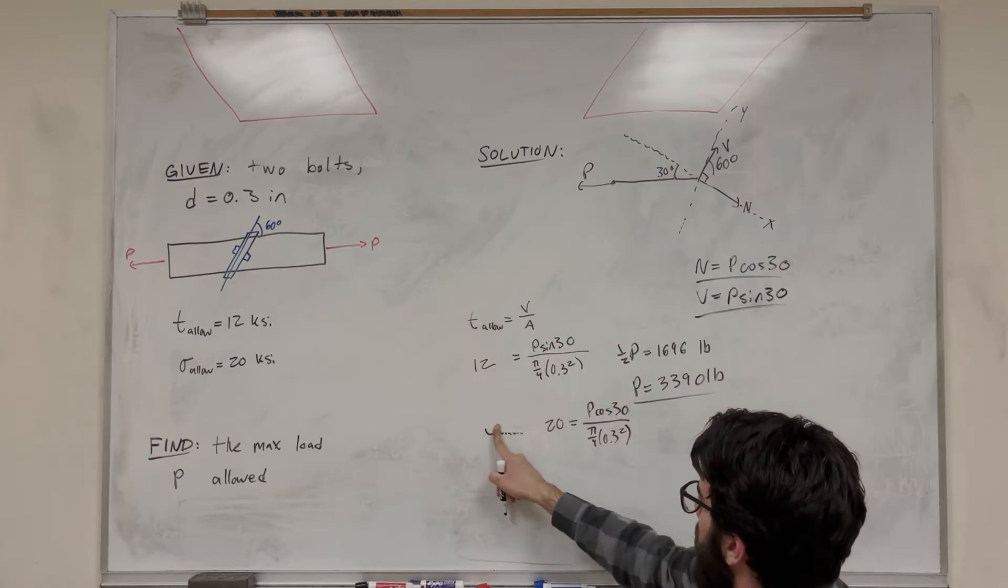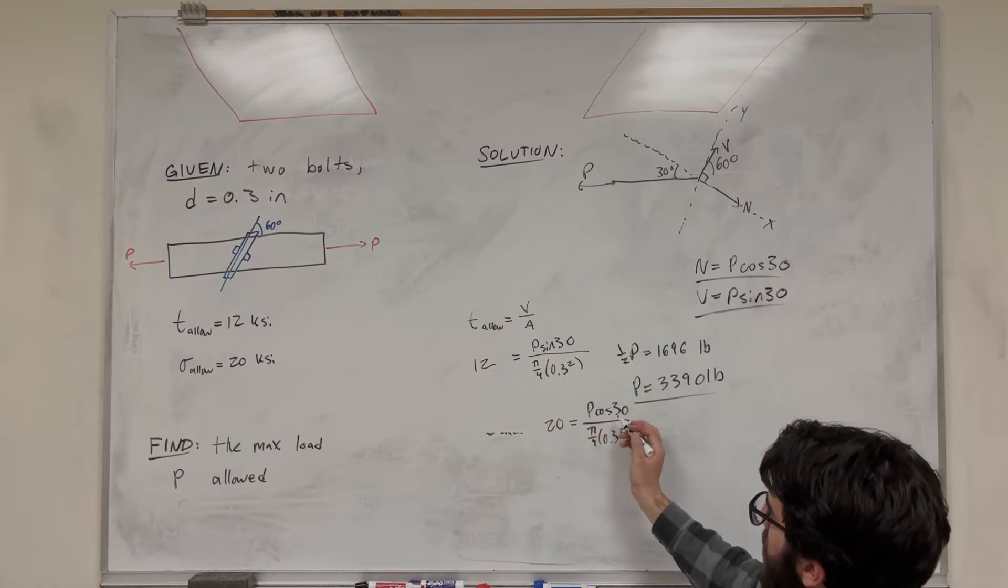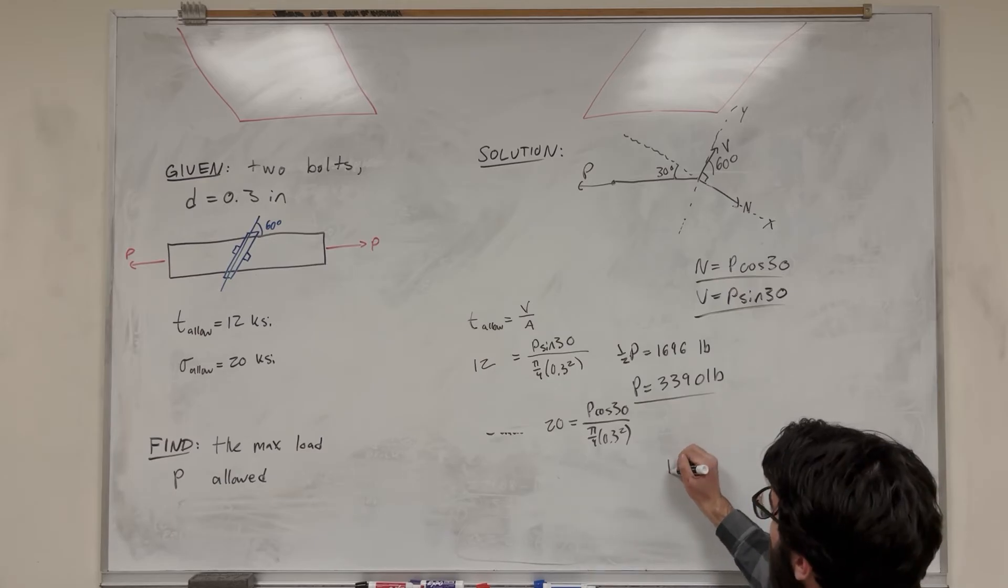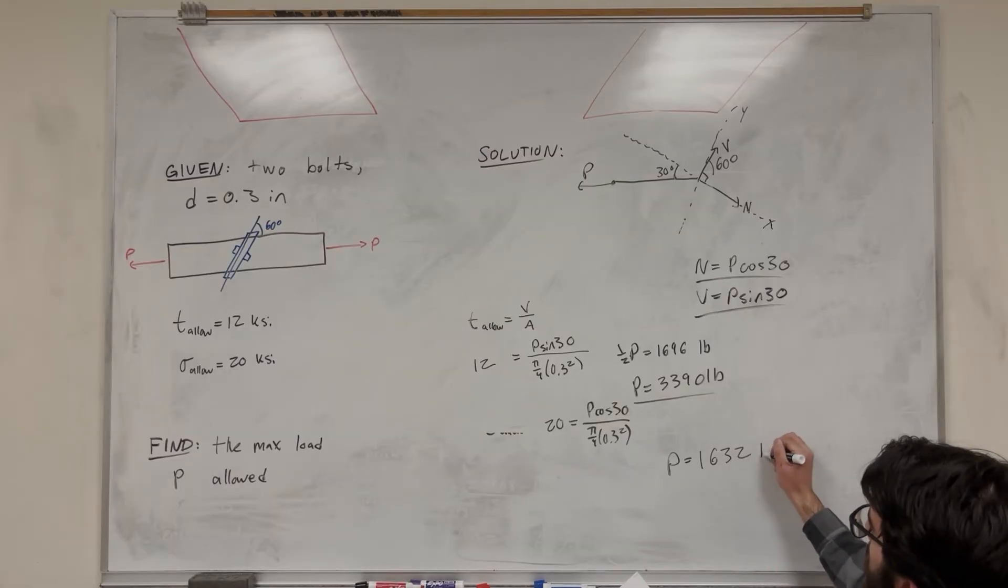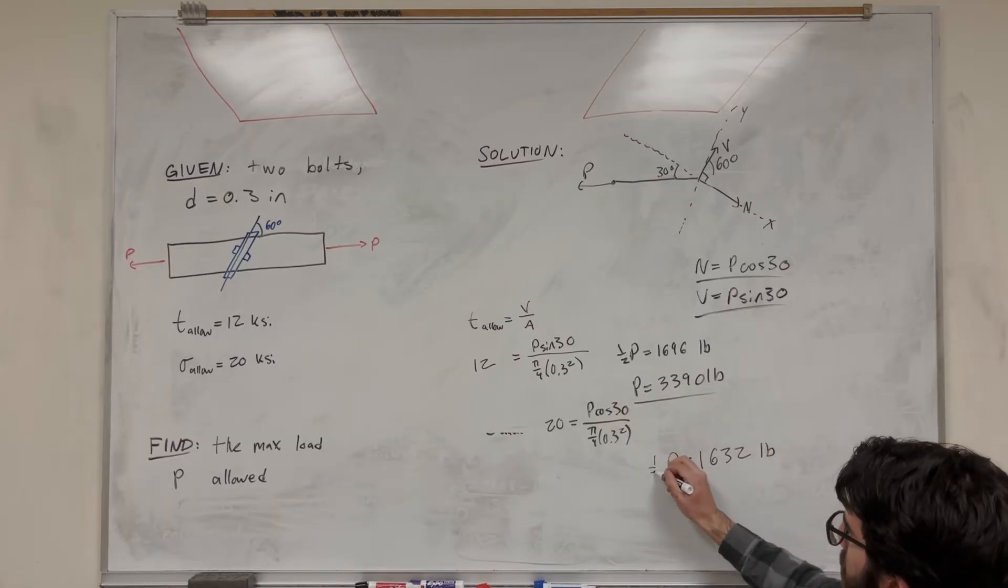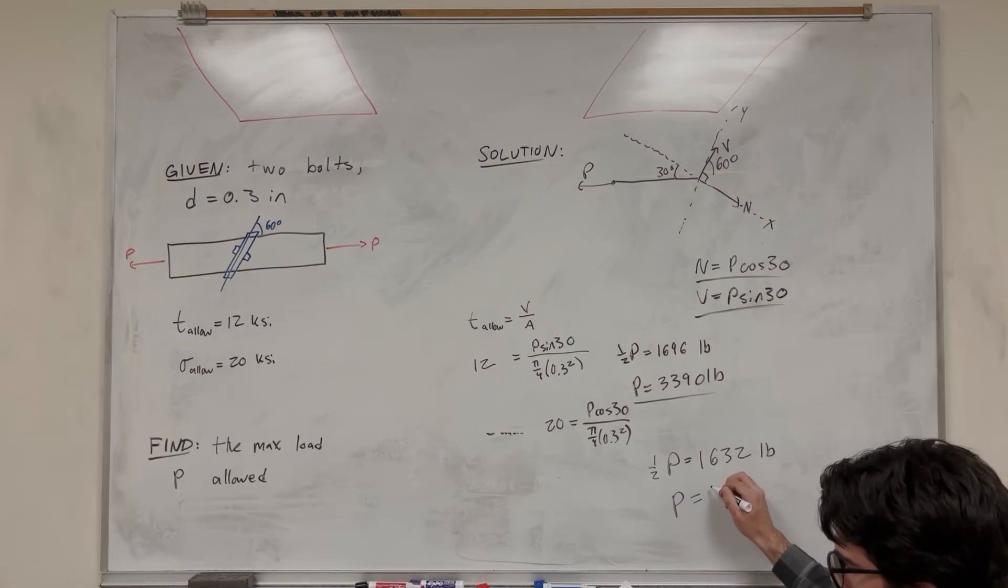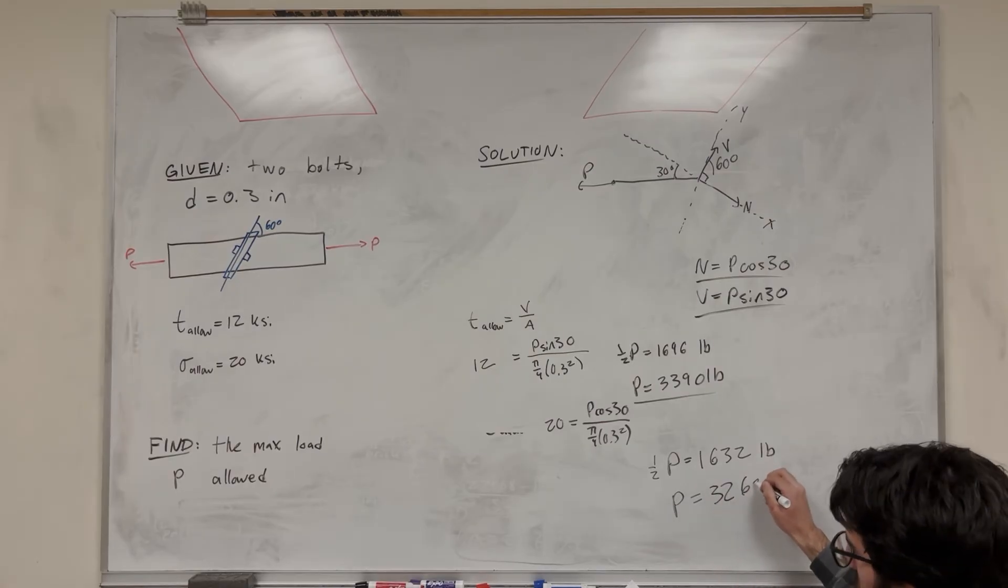So then if we solve for P here, we're going to multiply the area over, divide by cosine of 30, you know how it's done. You get that P here is equal to 1632 pounds. So you multiply this by two, and you get that P is equal to 3260 pounds.